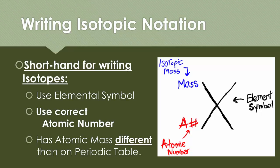So when you're writing isotopic notation, you're going to use the correct atomic number that is shown in the reference table, and then you're going to have the atomic mass that may or may not be different from that on the periodic table. The atomic mass, in this case, will be given to you in the question or specifically in the name of that isotope.